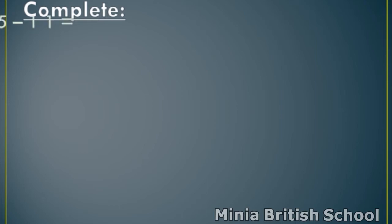Another example. Write T and U above the numbers and above the answer space. Write T and U above sixty-five, and write T and U above eleven, and T and U above the answer space. Start from units. In units, you have number one and number five. Where is the smallest number? One. So, count after one to five. After one: two, three, four, five. How many fingers? Four. So, write four under units.